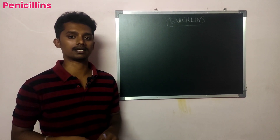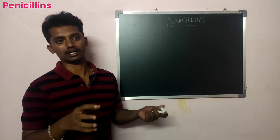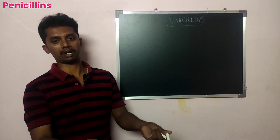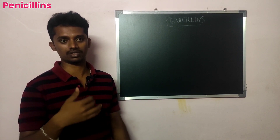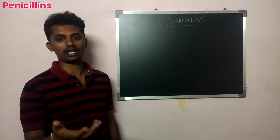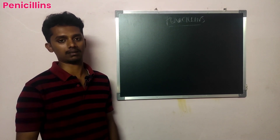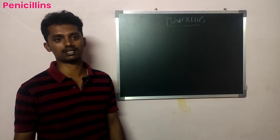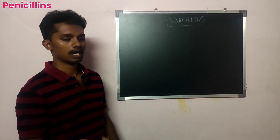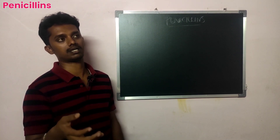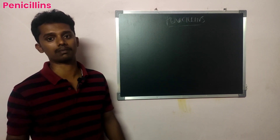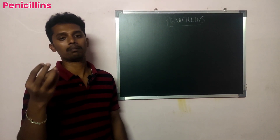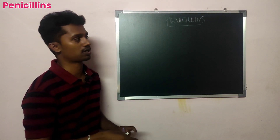In 1928, Alexander Fleming conducted an experiment. From that, he discovered the fungus Penicillium notatum and Penicillium chrysogenum. From these organisms, he extracted Penicillin G and Penicillin V — these are the natural penicillins.